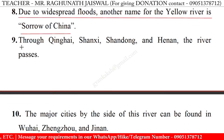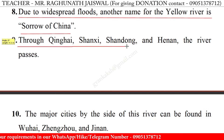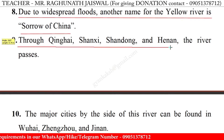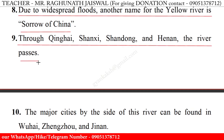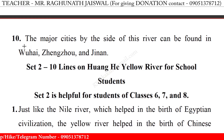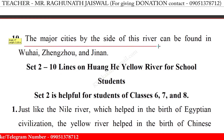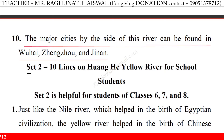9. Through Qinghai, Gansu, Shandong and Henan, the river passes. 10. The major cities by the side of this river can be found in Baotou, Xinzhou and Jinan.